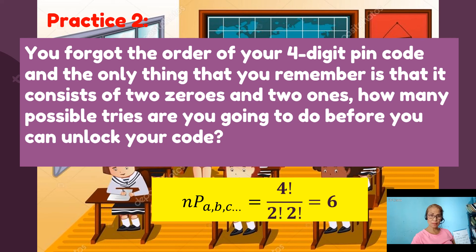So were you able to get that you are going to just try it 6 times. Why? Because since you have 2 zeros and 2 ones, you only have 4 objects to rearrange. So our numerator will be 4 factorial.